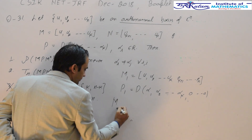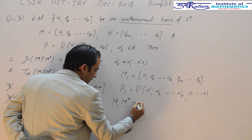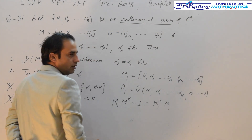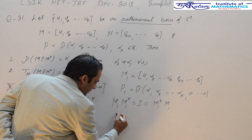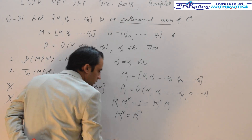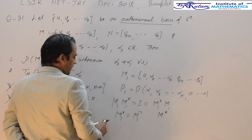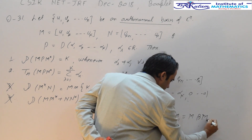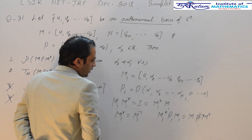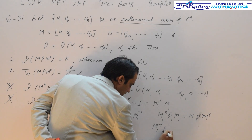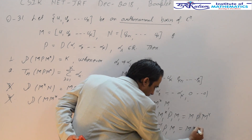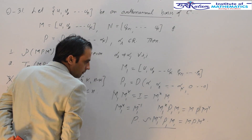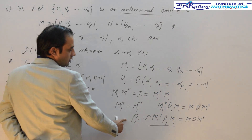We can easily identify that M1 times M1-star equals the identity, same as M1-star times M1, so this is the identity. This means M1-star equals M1-inverse. Using this, M1-star P1 M1 equals M1-inverse P1 M1, which equals MpM-star. By the similarity of matrices, this matrix is similar to matrix P1.